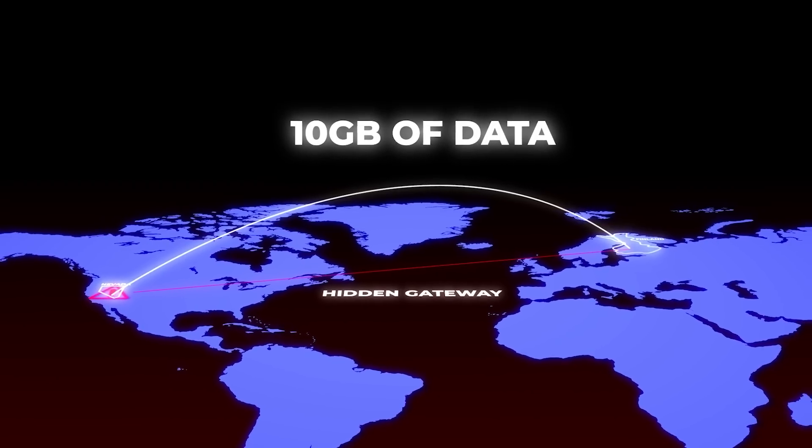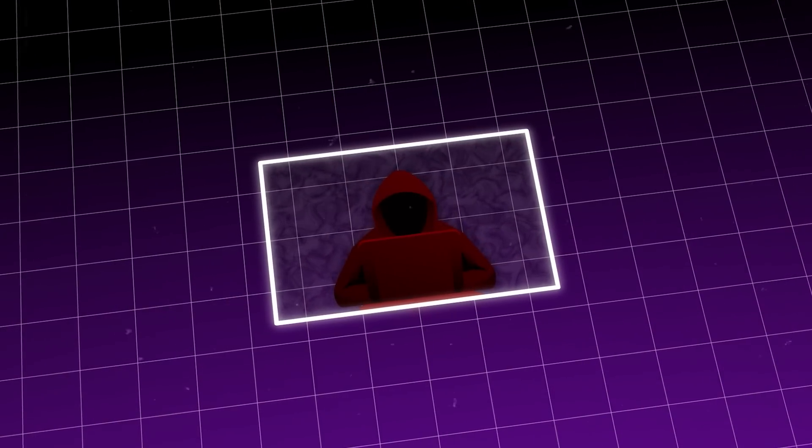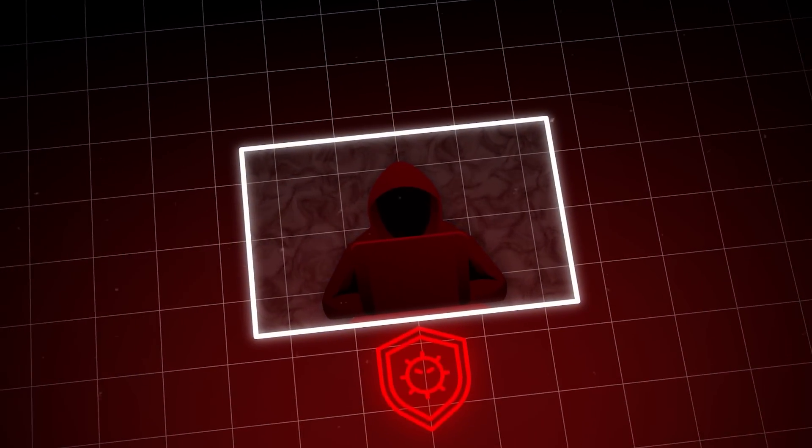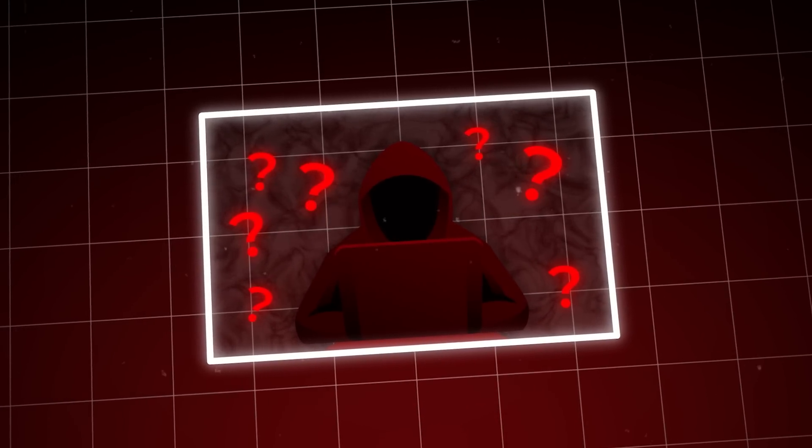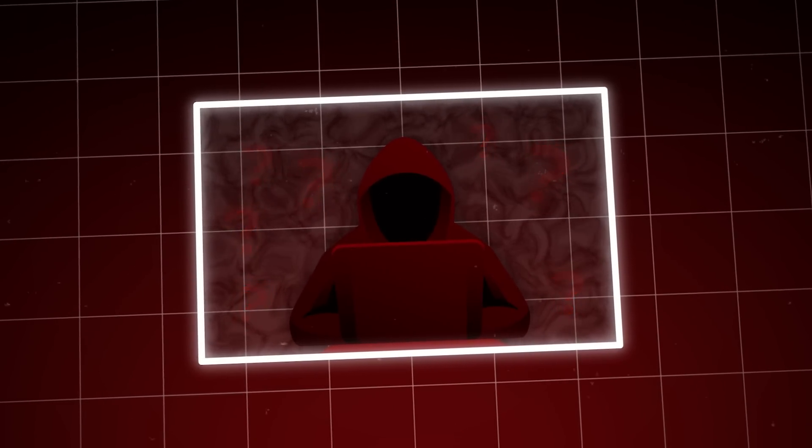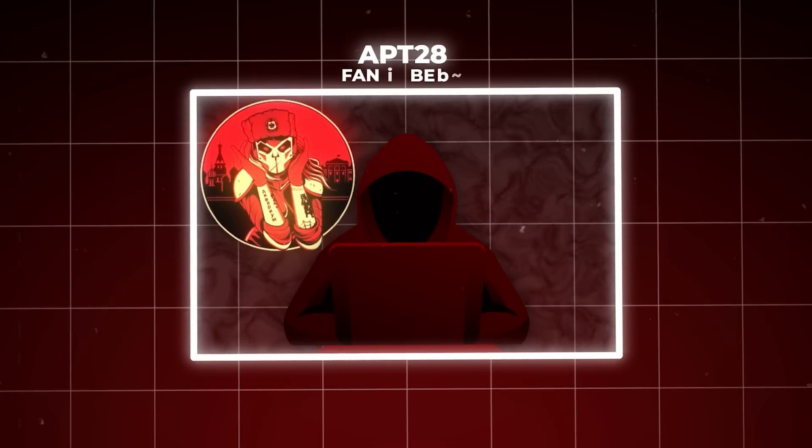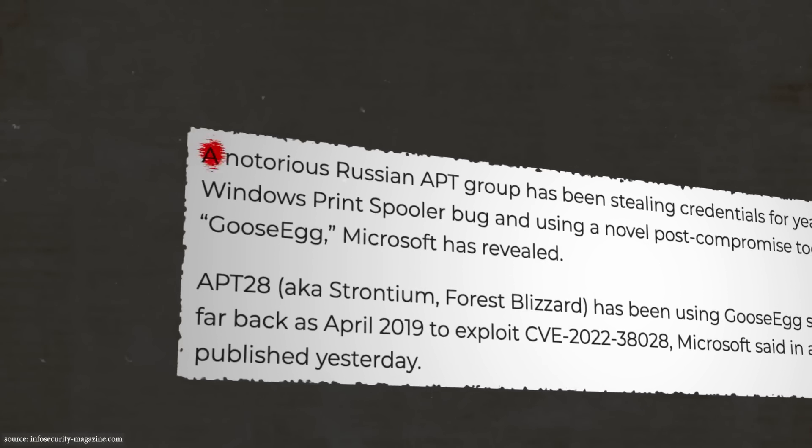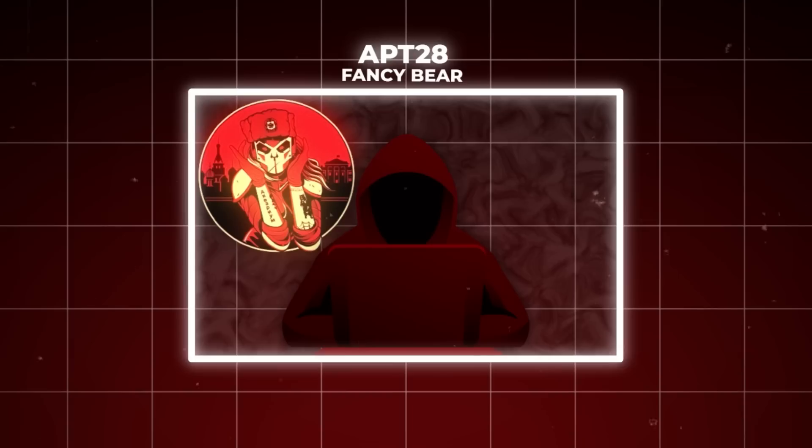Highlighting the scale and severity of the data exfiltration, as the security team delved deeper into the mechanics of the hack, they uncovered a complex malware operation. Rumors swirled about the potential hackers behind this audacious breach. Some speculated that it was the work of APT28, also known as Fancy Bear, a notorious Eastern European cybercrime group known for their stealth and expertise in exploiting Internet of Things devices.